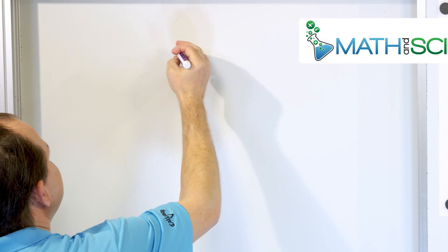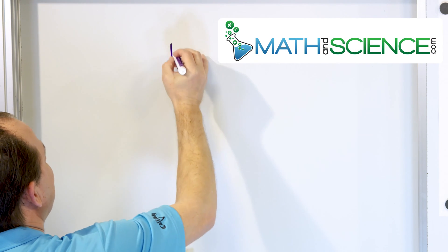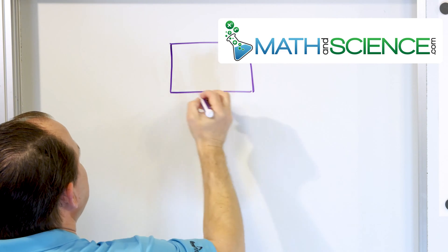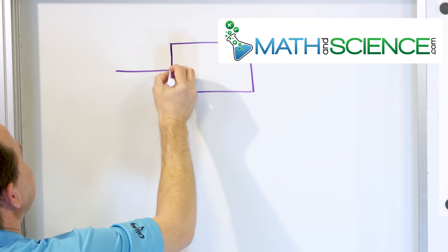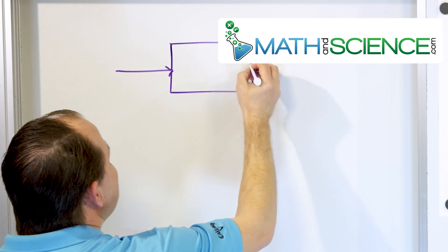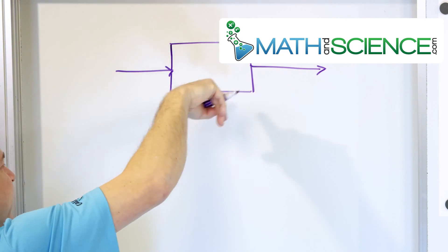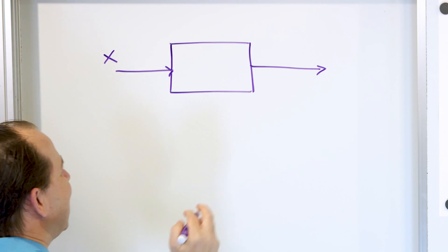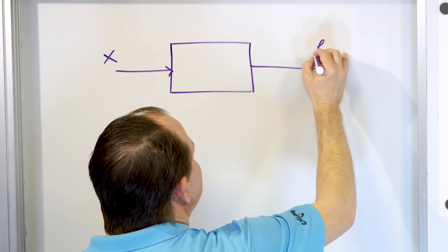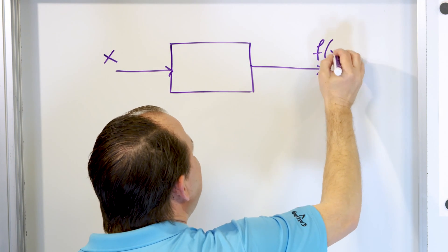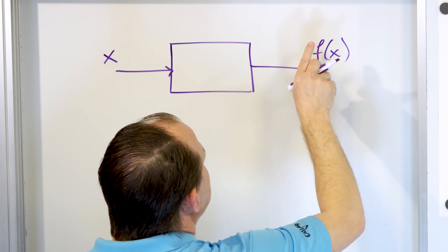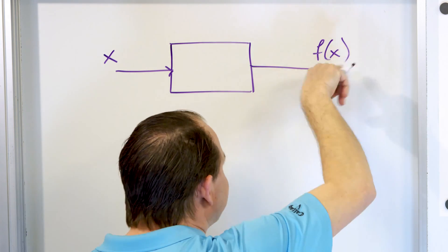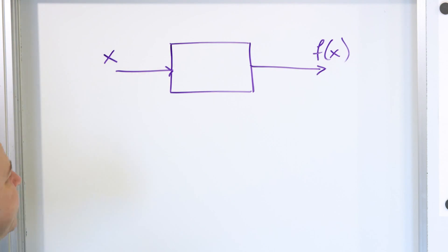What you need to remember is that we have this thing called a function. It is a calculational box where inputs come in and outputs come out, and inside is a calculation that happens. The input values we call x and the output values we call f of x. This means a function that operates on x and it produces calculational values.